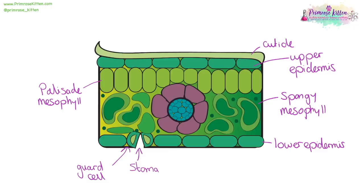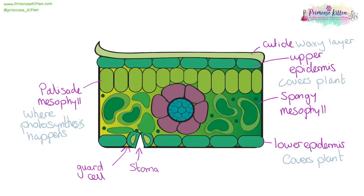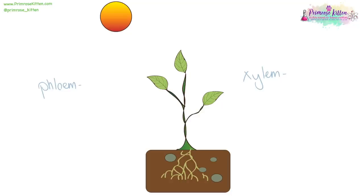Here we have a cross-section of a typical leaf. Our palisade mesophyll is where photosynthesis is going to take place. The cuticle is the waxy layer. Upper and lower epidermis cover the plant. Spongy mesophyll is a space for gas exchange. And the guard cell and stomata is where transpiration takes place. Inside the plant, we have the xylem and the phloem.